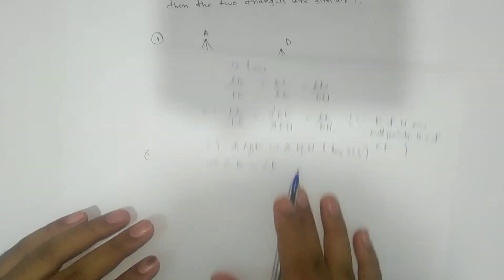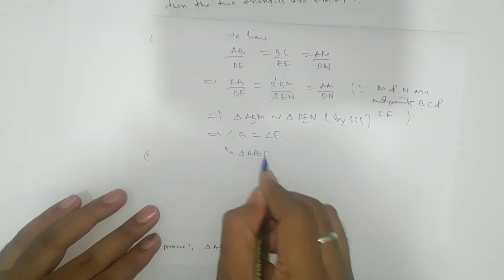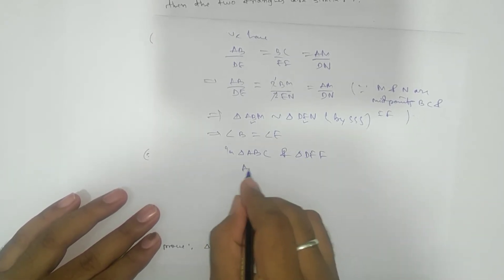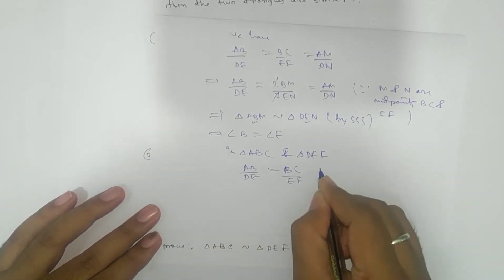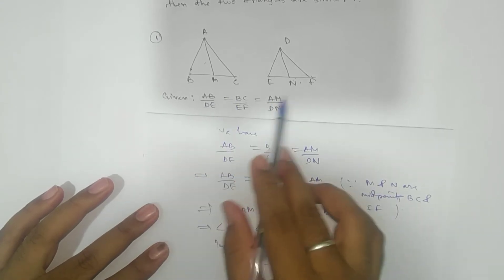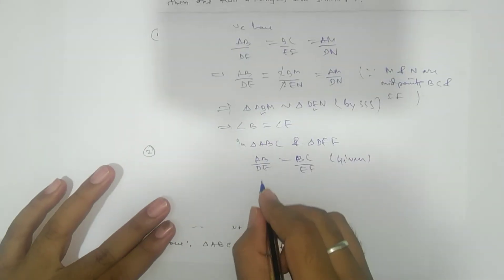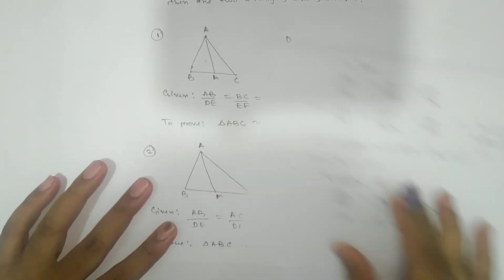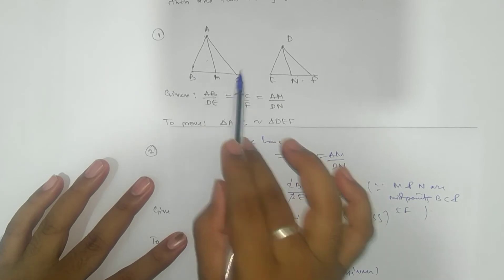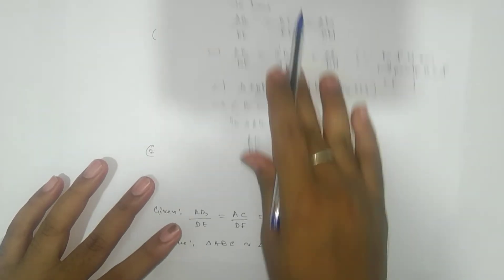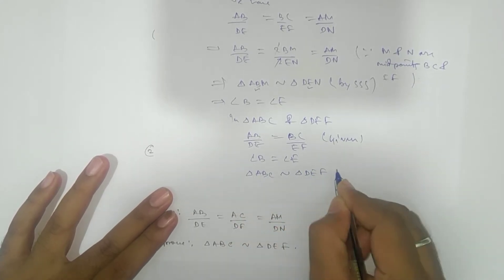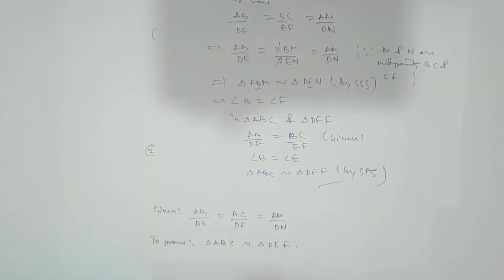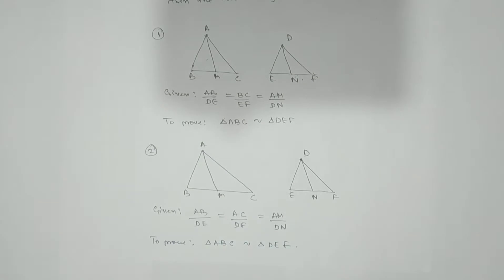From the similarity of triangles ABM and DEN, by the definition of similarity, corresponding angles are equal, so angle B = angle E. Now entering triangle ABC and DEF: we have AB/DE = BC/EF (given) and angle B = angle E (just proved). Therefore triangle ABC is similar to triangle DEF by SAS criteria. Hence proved.